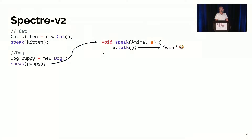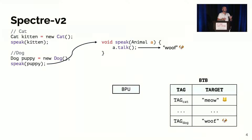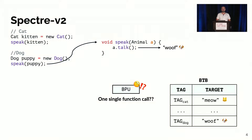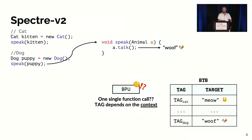The CPU implements a component known as the branch prediction unit (BPU), which tries to predict which function needs to be executed. Inside the BPU there is a cache known as the branch target buffer, or BTB, which contains the different targets for this function. But the BPU sees one single function call — so how can it distinguish which of the two targets it needs to execute? The answer is: it depends on the context.